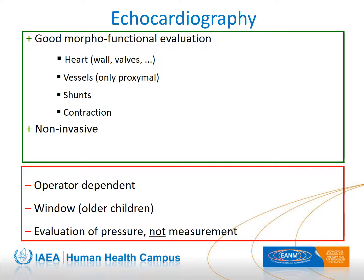Ultrasound is an indispensable tool in the diagnosis and management of congenital heart disease. The most relevant factor is the operator, but even the most skilled pediatric cardiologists cannot overcome the physical limitations of the method, including dependence on the echographic window and the impossibility of direct evaluation of lung blood flow. Even Doppler sampling for pressure gradients is limited to the proximal part of pulmonary arteries.